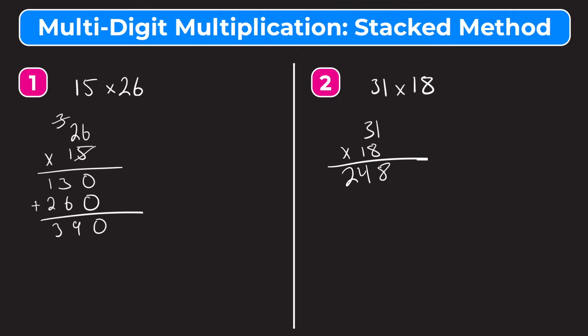We're done with the 8, so we can cross that off. Now we have to do 10 times 31, but we'll just use 1. Because it's in the tens place, we put our 0 under the 8. Then 1 times 1 equals 1, and 1 times 3 equals 3. So we have 8 times 31 which equals 248, and 10 times 31 which equals 310. Adding those together: 8 plus 0 is 8, 4 plus 1 is 5, and 2 plus 3 is also 5. So our final answer is 558 — 31 times 18 equals 558.